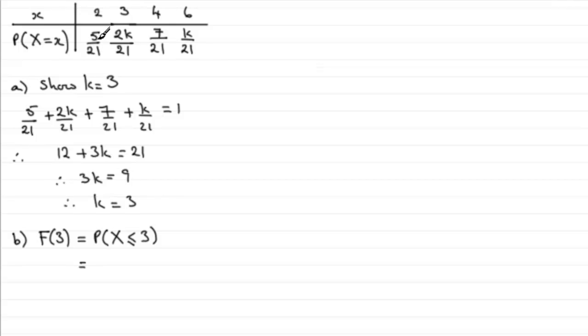In other words 5 over 21 plus, well we've got 2k over 21 here and k was 3 so 2 times 3 is 6 so it's going to be 6 over 21. And that's going to give us a total of 11 over 21. Okay so that's part b.